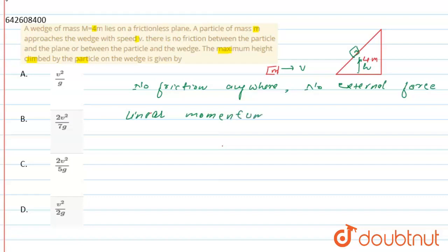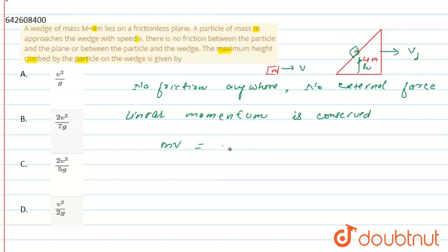The initial momentum is mass m times velocity v. When the particle climbs the ramp, the whole system — mass M and small mass m — will be moving together with the same final velocity.